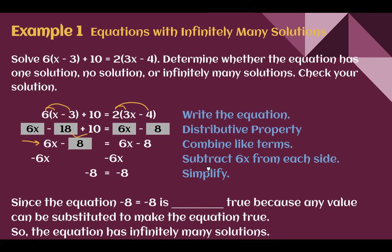I can actually tell right from this point how many solutions it's going to have, but we'll look at that a little later. For now, I'm going to subtract 6x from both sides. 6x minus 6x is 0 — that cancels on both sides. What I end up with is negative 8 equals negative 8. Once my variable has eliminated itself, I end up with a true statement. Is negative 8 equal to negative 8? Yes, it is always true. So any value we choose can be substituted to make this equation true, meaning this equation has infinitely many solutions.